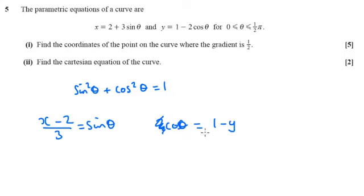So cos theta is going to equal 1 minus y over 2.